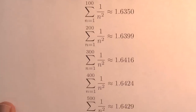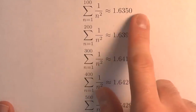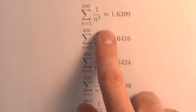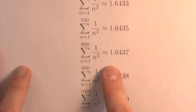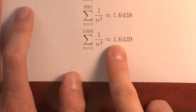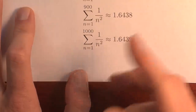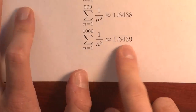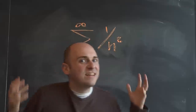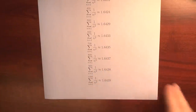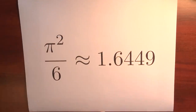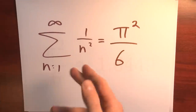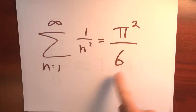We could try summing many more terms. The sum of the first 100 terms is about 1.63; the first 200, 300, 400 terms continue growing slowly. If we add up the first 1,000 terms — 1 over 1 plus 1 over 2 squared plus 1 over 3 squared, all the way to 1 over 1,000 squared — we're getting just above 1.64. And pi squared over 6 is about 1.64. It turns out the sum of the reciprocals of the squares is exactly pi squared over 6.